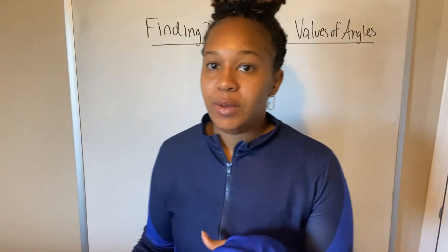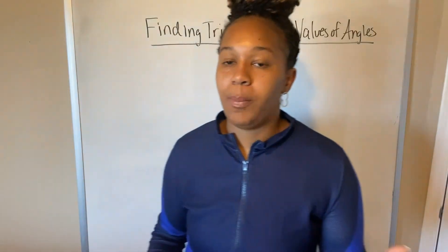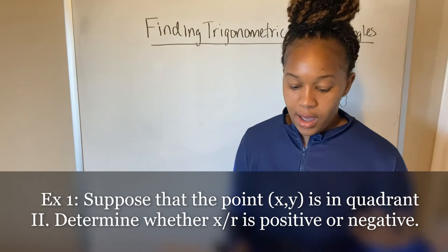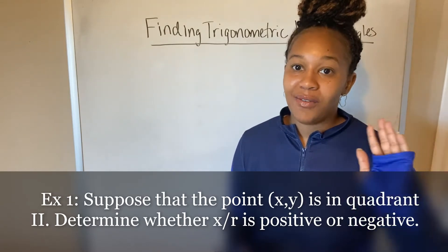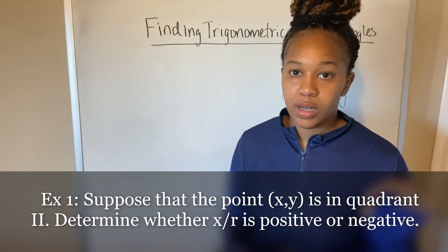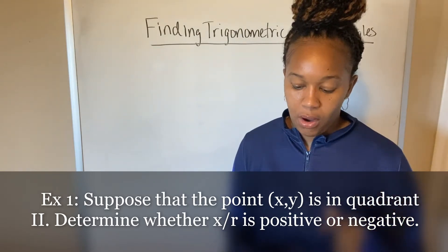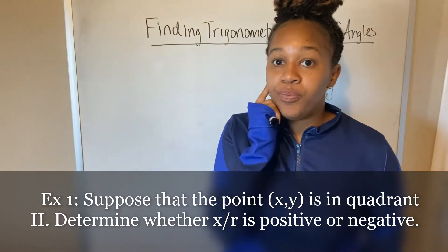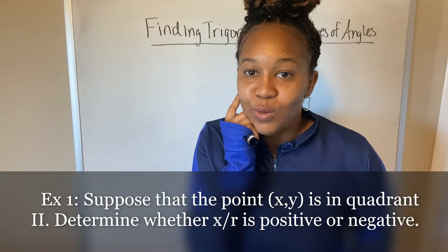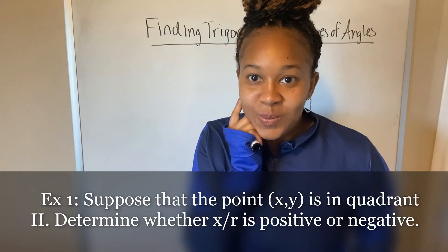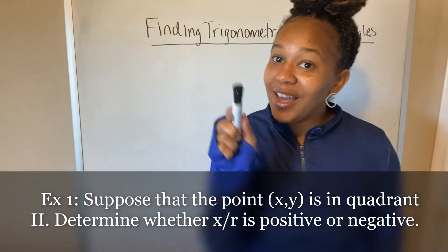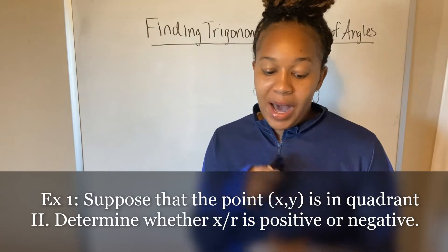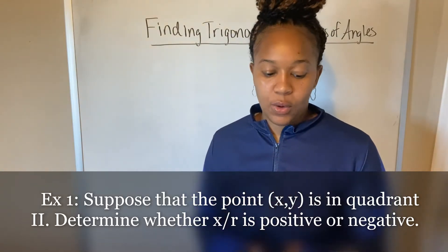Now we're going to dig a little bit deeper and look at different types of problems. The first example: suppose that the point (x, y) is on the terminal side of an angle and is in quadrant two. We want to determine whether x over r is positive or negative. If you think back to the last video, what is x over r equal to — which trigonometric function? Hopefully you said cosine. So the cosine of theta equals x over r. We want to know: is the cosine of theta positive or negative if the terminal side of the angle is in quadrant two?